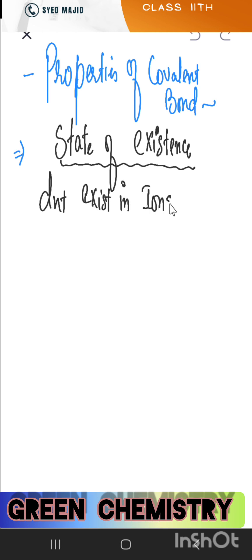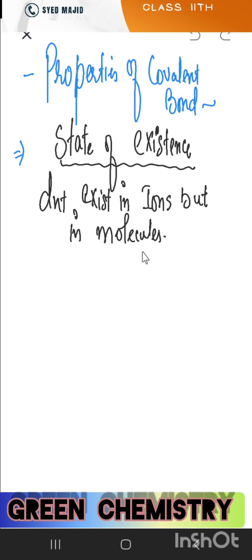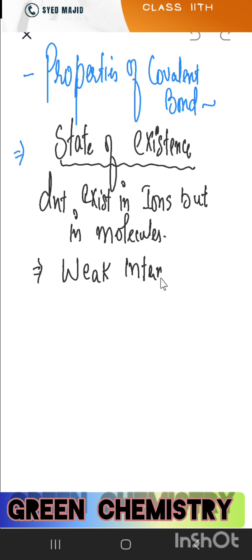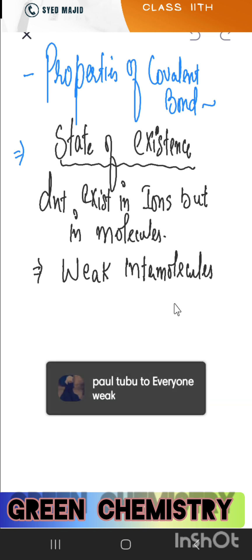Next: electrostatic force. In covalent compounds, electrostatic force is absent. Because of this, they have weak intermolecular forces between molecules. Ions only exist where there is transfer of electrons. Since covalent compounds have weak inter-molecular forces, they exist as liquids or gases.